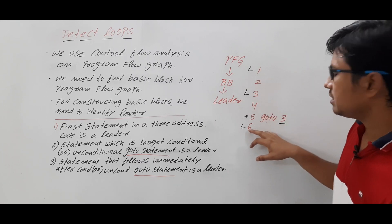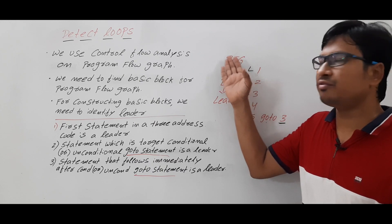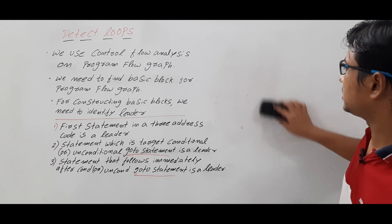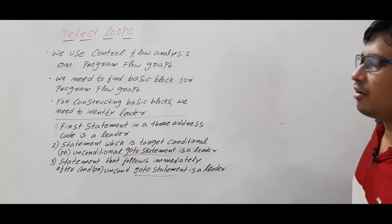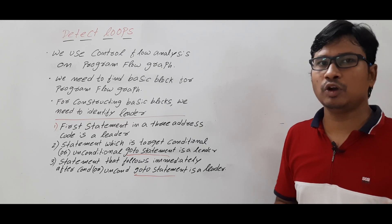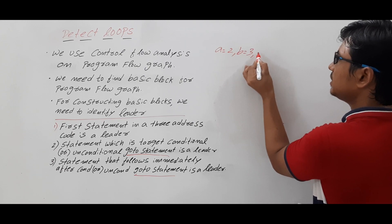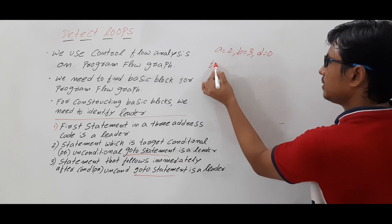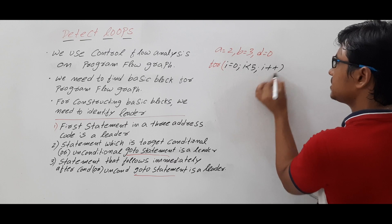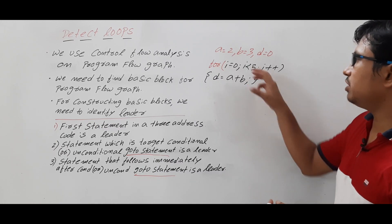Once we identify the leaders, we can easily construct the basic blocks. On the basic blocks we will construct the program flow graph, and from the control flow analysis we will identify the loops. Let me give a simple example of a high-level language and convert it into three-address code. The example is: a = 2, b = 3, d = 0, then a for loop from i = 0 to i < 5 with i++, containing the instruction d = a + b.